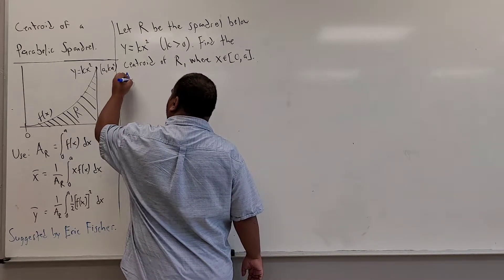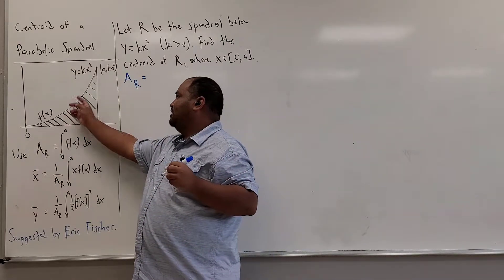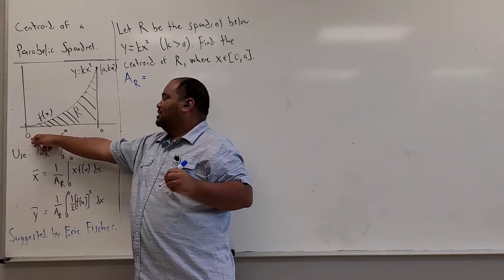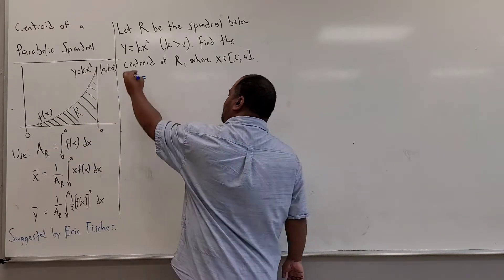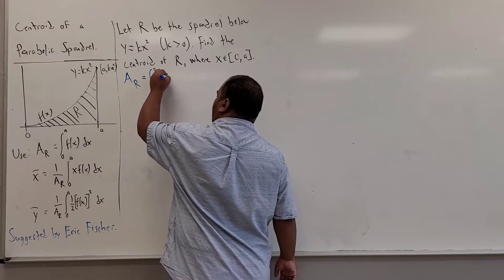First, we'll need the area of this region, R. And that is just as simple as integrating this function, y equals kx squared, from x equals 0 to x equals a. So that is the integral from 0 to a of kx squared dx.